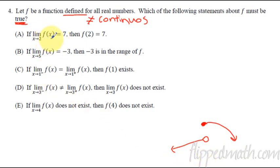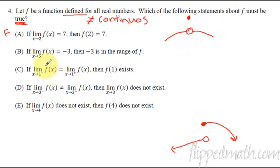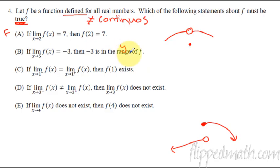Part a: does the limit as x approaches 2 equaling 7 mean that f(2) must also equal 7? No. A counter-example: the function could be approaching a y-value of 7 from both sides, but the actual dot could be above or below 7. So that's false. Part b: if the limit as x approaches 5 equals negative 3, does that mean negative 3 is in the range of f? No — the function might never hit that y-value. That's also false.